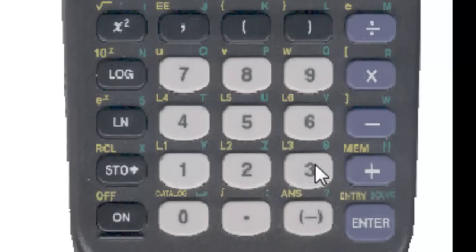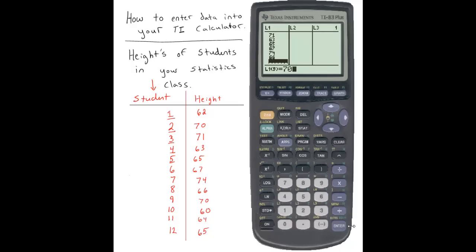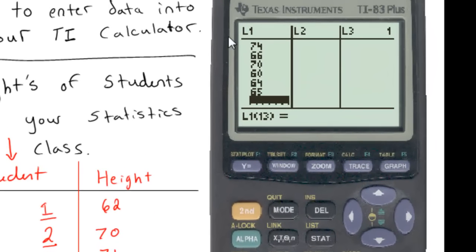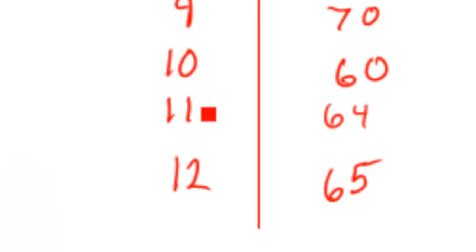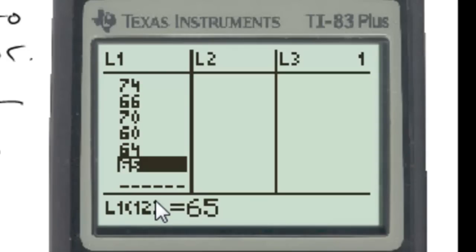You may want to pause the video and enter them into your calculator at your own speed. Now that I have all of my values entered into list one — denoted L1 in your TI calculator — I should have approximately 12 values. As you can see, I have 12 students. If I go up and highlight the last student entered, it should be L1, the 12th position, which means I have 12 items in my list. We want there to be 12 because that's how many students we had.